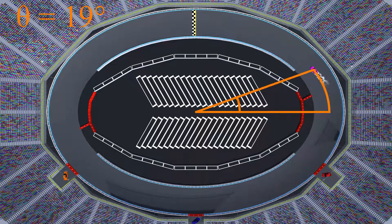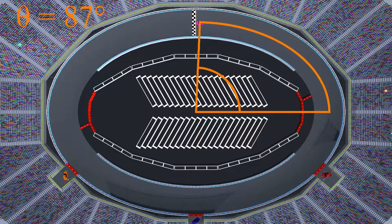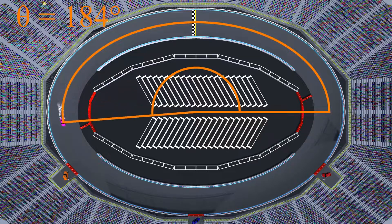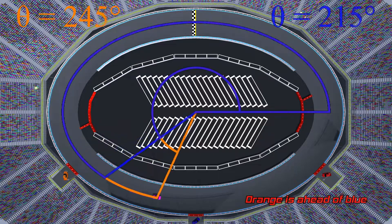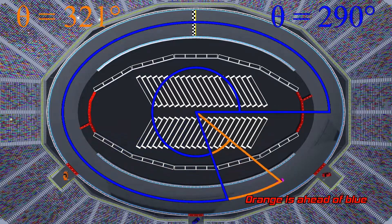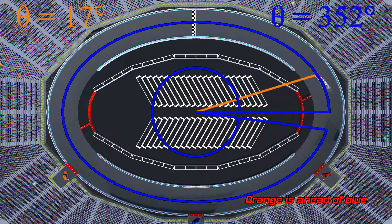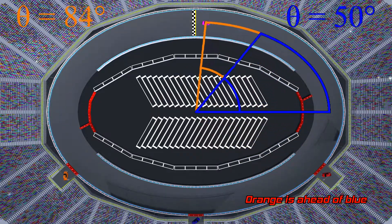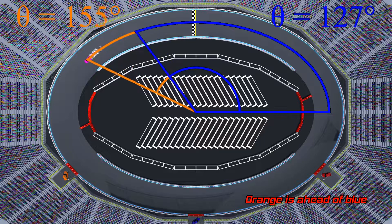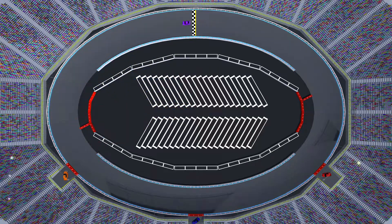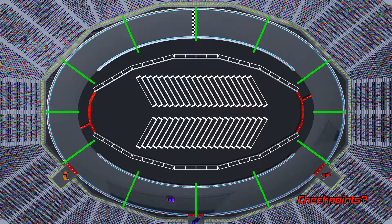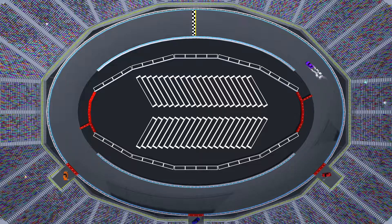I won't get too far into the specifics, but the lap counter and the overtake tracker both make use of the ellipse equations that I introduced in my first video. The basic idea is that by keeping track of the current angle progress of the player and the opponents, we can determine who's in front and what lap the player is currently on. I got a few comments in my earlier videos asking about why this was used instead of a checkpoint system. The reason is that since we are using the angle instead of just keeping track of checkpoints, it can be much more precise and exactly follow the elliptical track.